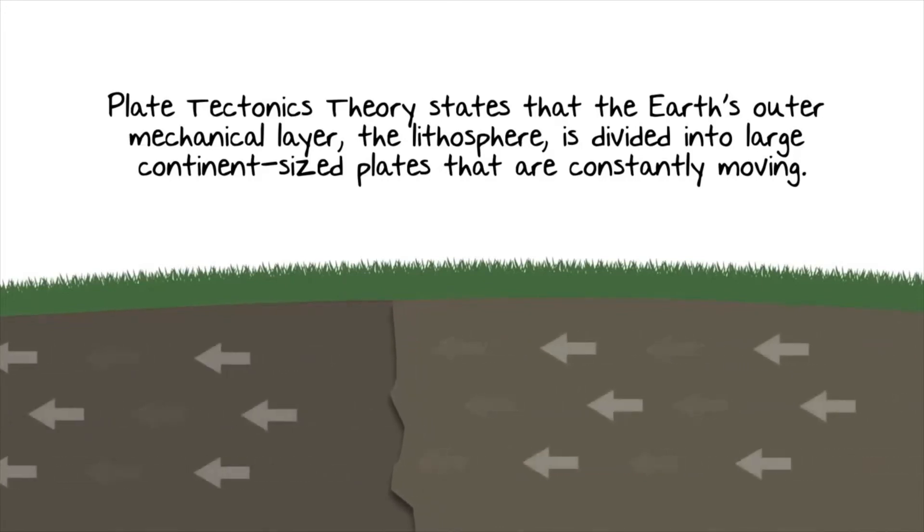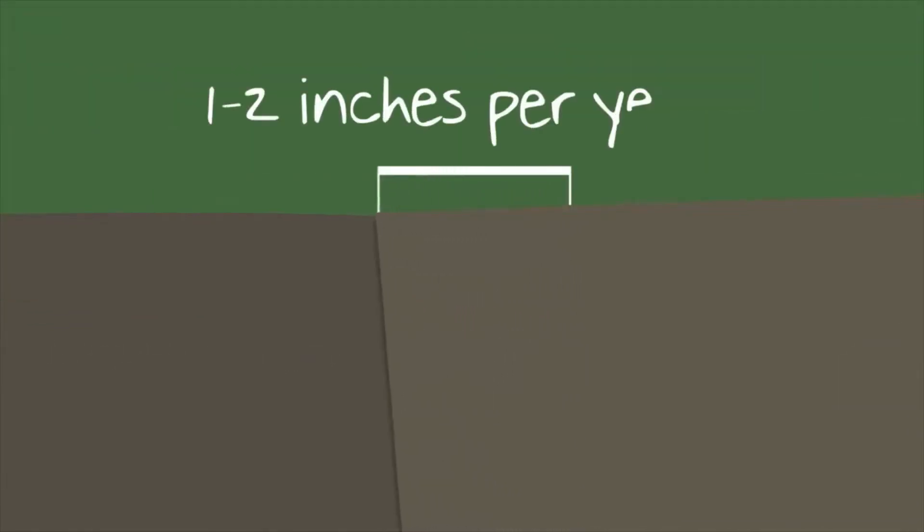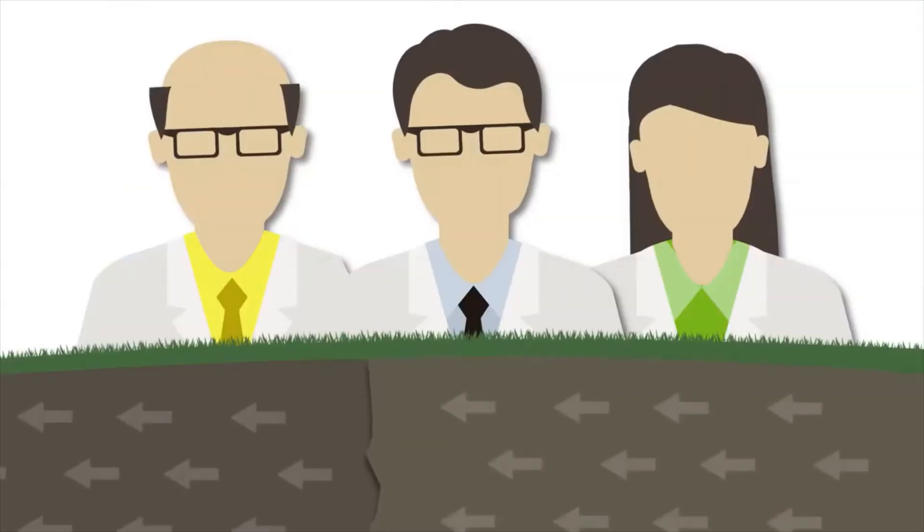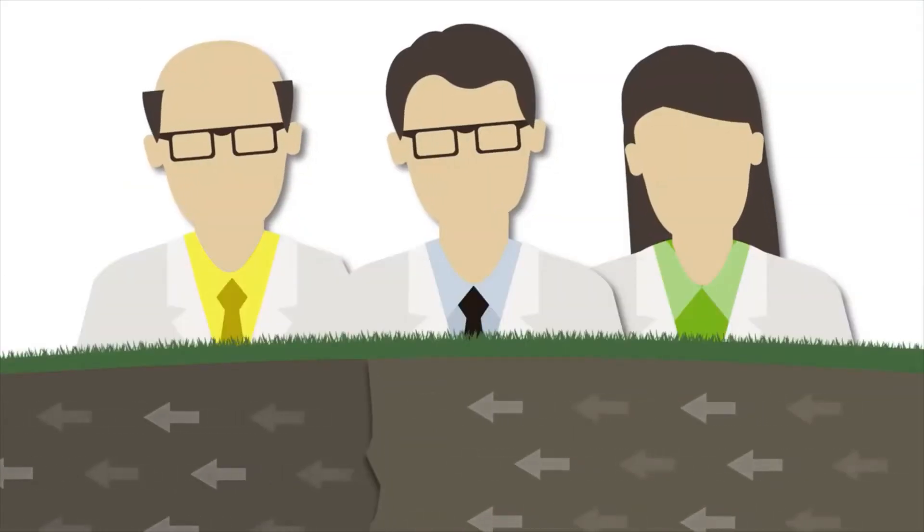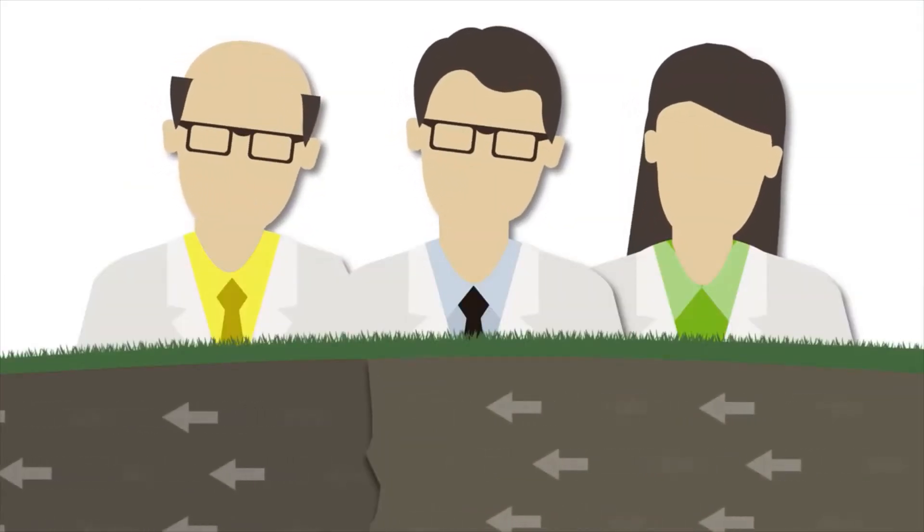How fast are they moving? Pretty slowly actually, around one to two inches per year, which is why it was so hard for scientists a hundred years ago to wrap their heads around the idea. So what changed their minds?